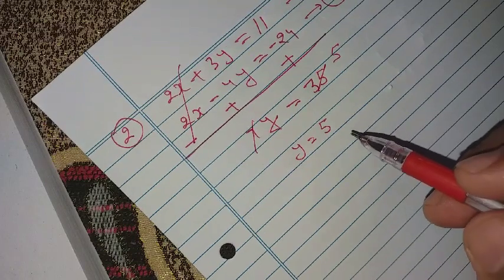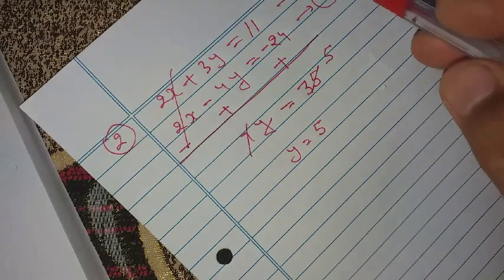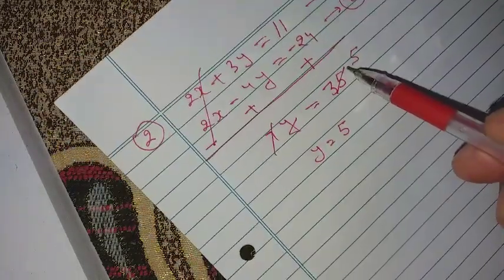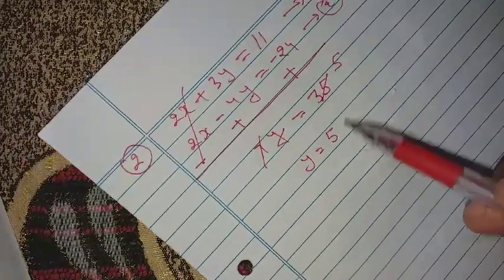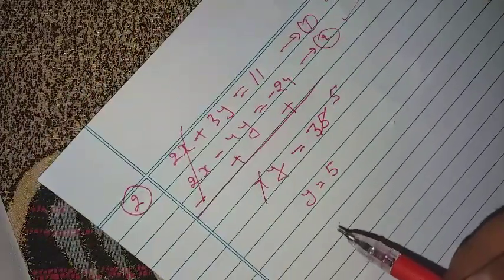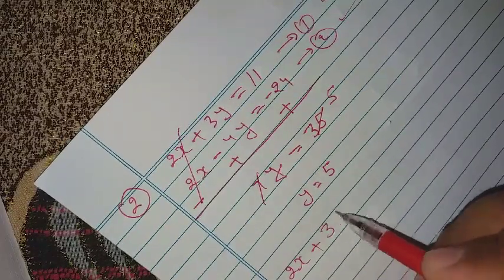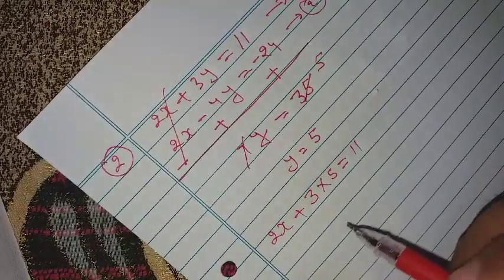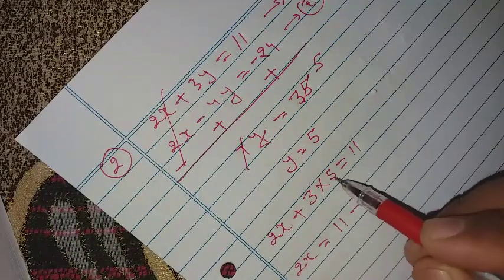So we will put the value of y in equation 1 or 2 and we will get the value of x. Okay so let's put in equation number one. 2x plus 3y. So 3 into 5 equal to 11. Okay so 2x equal to 11 minus 15.